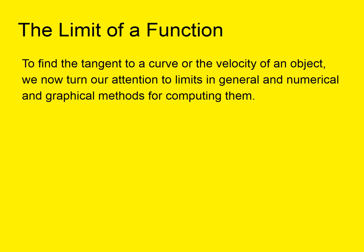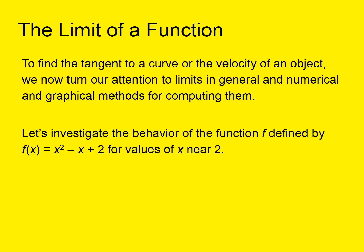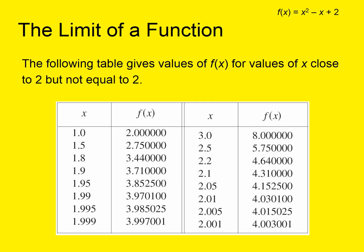Before we just approximated the limit — we didn't actually prove what the limit was — but now we're going to explore that idea. Let's investigate the behavior of a function f defined by f(x) = x² - x + 2 for values of x near 2, but not equal to 2. Here we see the outputs when we put x = 1 into the function.